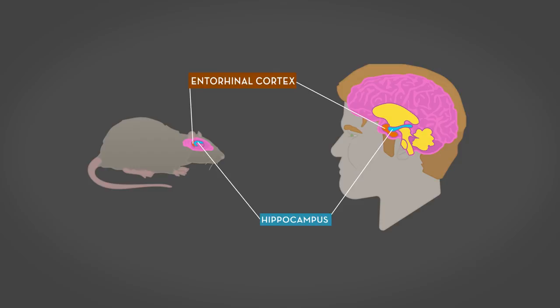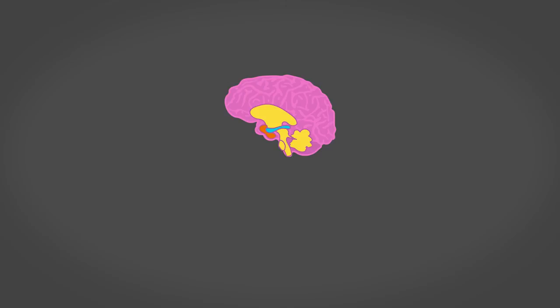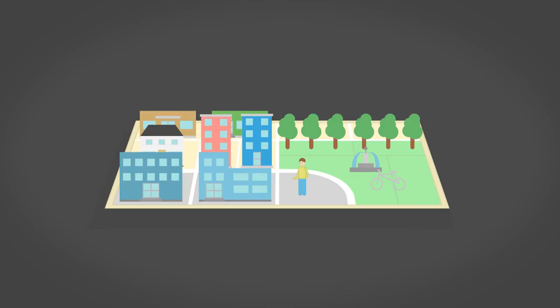As it happens, the area containing grid cells is the same area in humans that is first damaged in many patients suffering from Alzheimer's disease. In fact, one of the first symptoms of Alzheimer's disease and dementia is that patients become disoriented and have trouble finding their way.